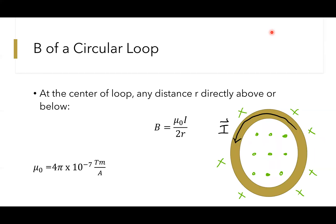The magnetic field of a circular loop has a very similar formula. The one thing you have to remember is that it can only find you the magnetic field at the center of the loop, but it can find at any distance r directly above or directly below.